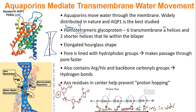The important aspects of the aquaporin in recap: hydrophobic groups help speed water movement once it's in the pore; arginines, histidines, and backbone groups hydrogen bond with the water while it's passing through; and two central asparagine residues prevent proton hopping.